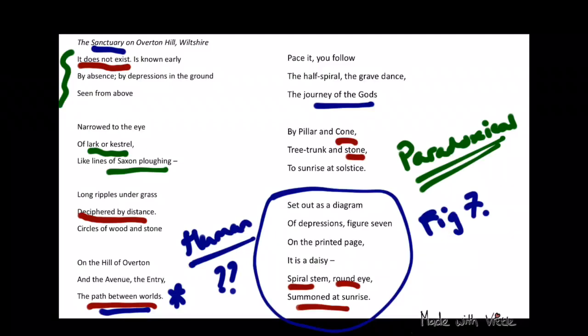Whereas the second half of that stanza she says it is a daisy, spiral stem, round eye, summoned at sunrise. So a lot of these kind of neolithic structures that were around, like Stonehenge, the Sanctuary, lots of places that are kind of dotted around the UK, were often supposed to interact with the sun in some way.